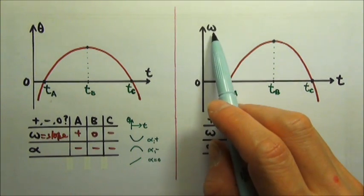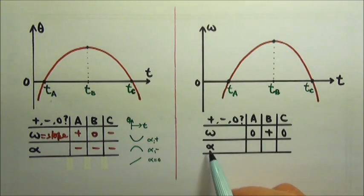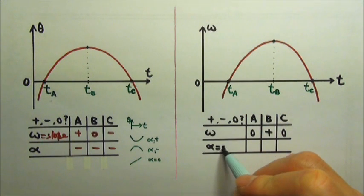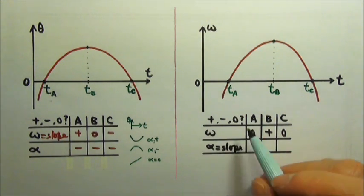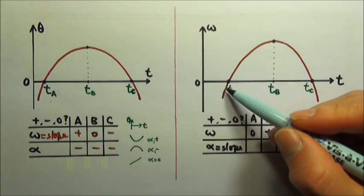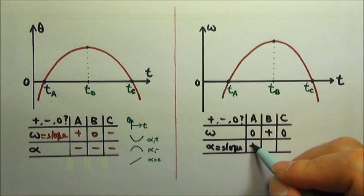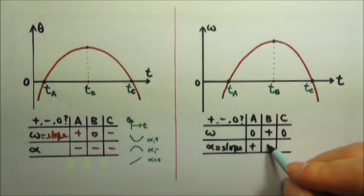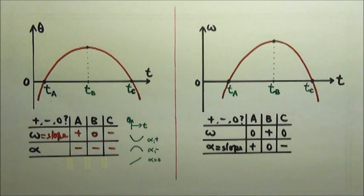For an angular velocity as a function of time graph, the angular acceleration is the slope of the graph, so we just have to look at the slope. At a, the slope is positive. At b, the slope is zero, and at c, the slope is negative.